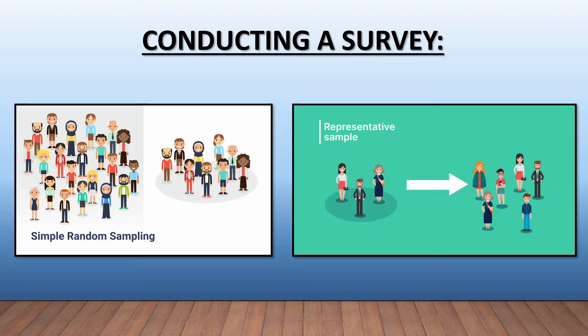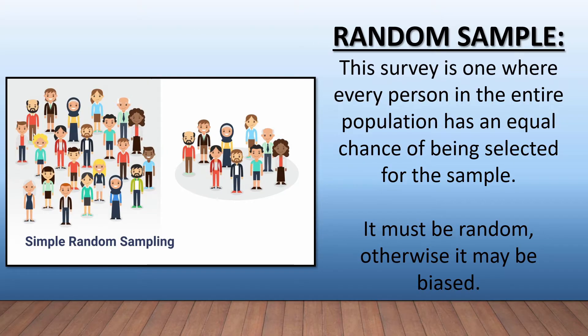When conducting your survey, you can do this by two means: using a simple random sampling or a representative sample. Let's see what the difference is between the two. With a random sample, every person in the entire population has an equal chance of being selected for the sample. It must be random, otherwise it may be biased.